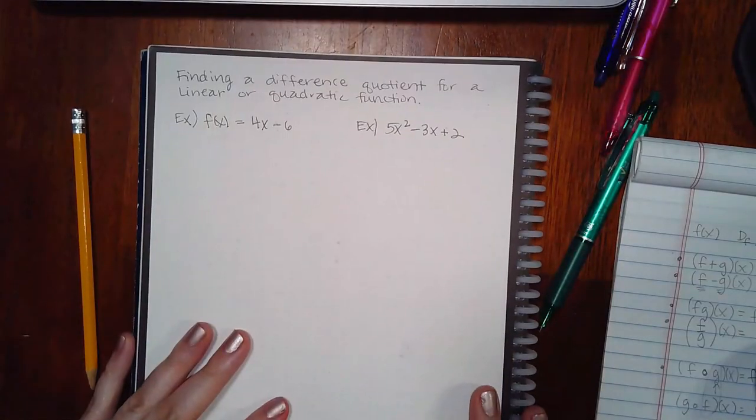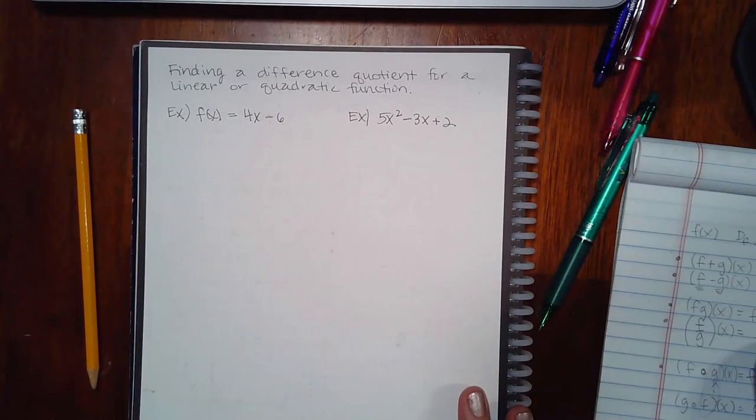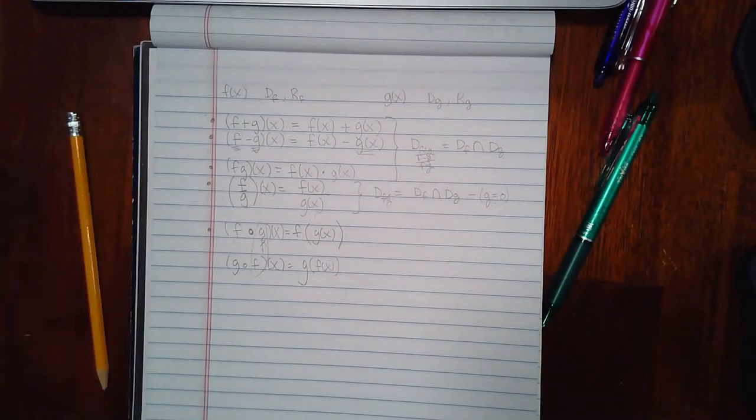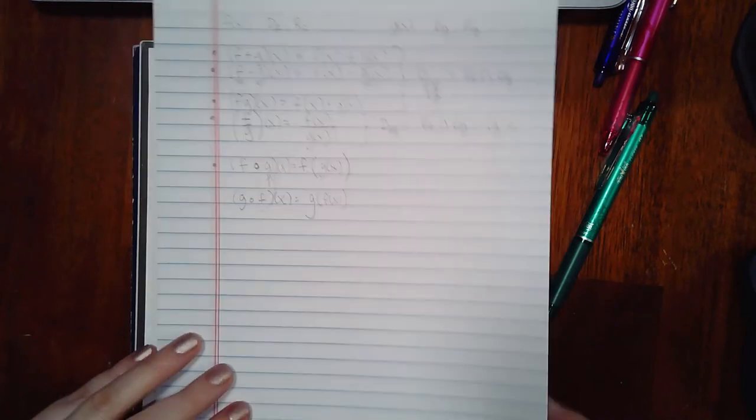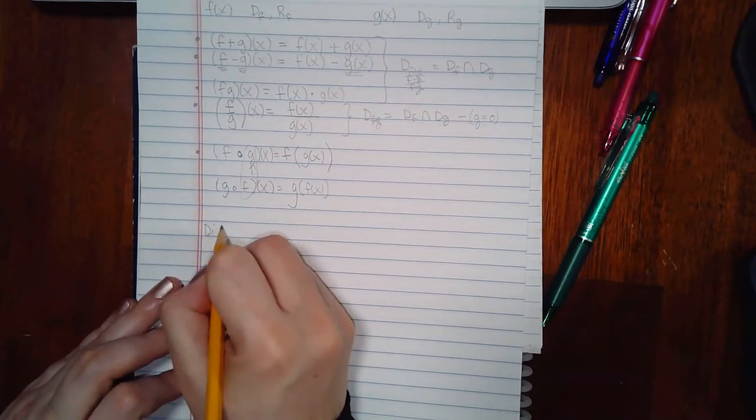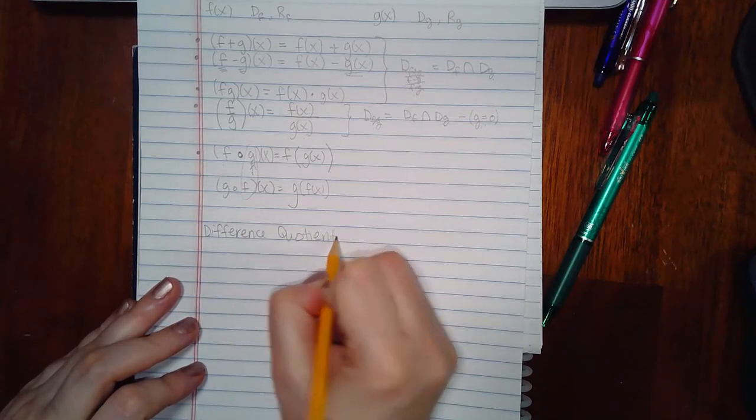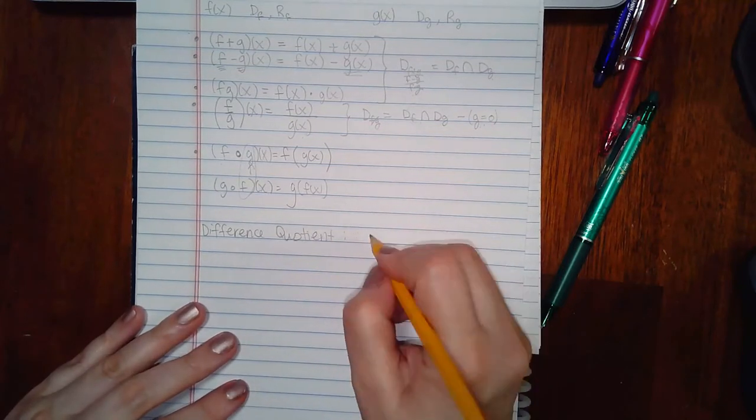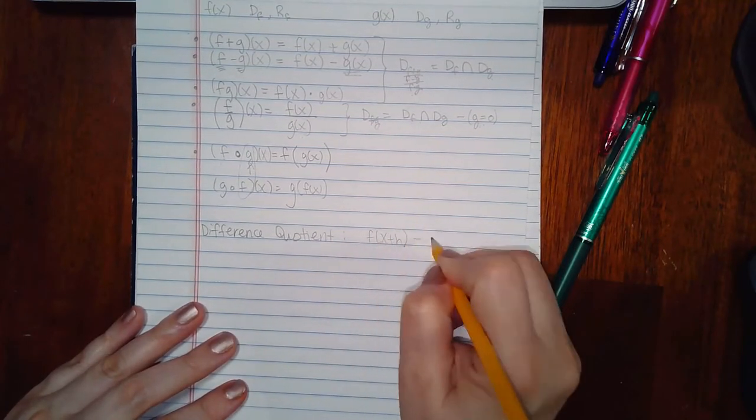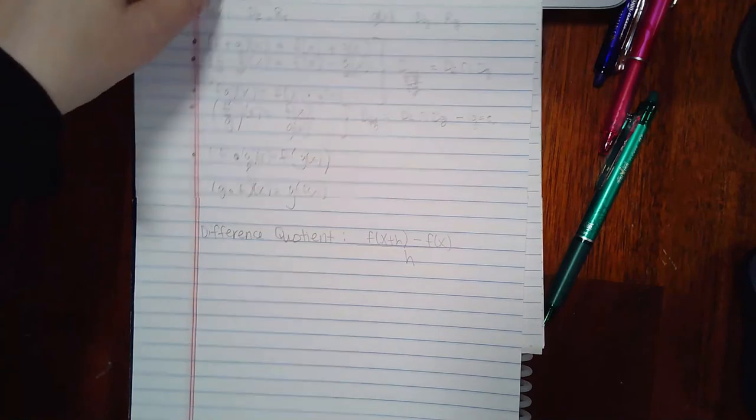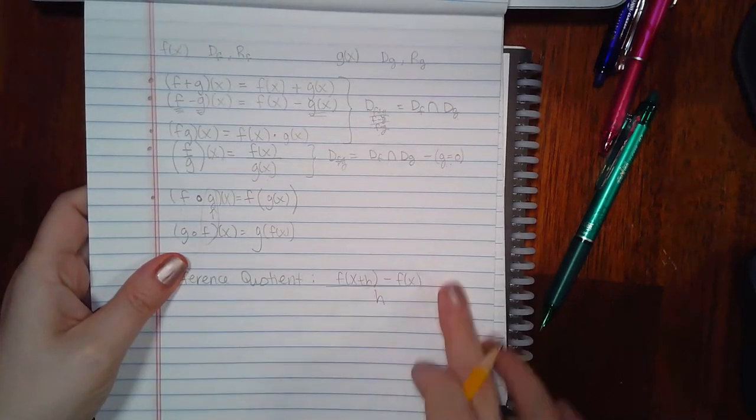Let's see what else we've got here. So now this talks about finding the difference quotient for a linear or quadratic function. Well, the first thing you need to know is what the heck is a difference quotient. And I believe they use H in the computer. It really doesn't matter what the other variable is. But a difference quotient is this fraction here: f of x plus h minus f of x over h.